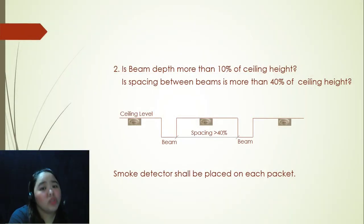Going to the second argument, is beam depth more than 10% of ceiling height? Is spacing between beams more than 40% of ceiling height? If that's the case, smoke detector shall be placed on each pocket. Let's take a look at the slide here. You will see that the smoke detector is now placed on each pocket.